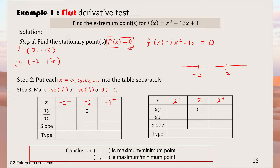A positive dy/dx gives an upward slope, a negative dy/dx gives a downward slope — just like y = mx + c where positive m slopes upward and negative m slopes downward. For x = 2, the pattern shows a downward then upward slope, forming a u-shape, so (2, -15) is a minimum point.